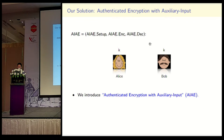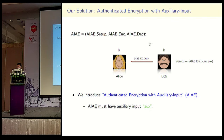Our solution is to introduce a new primitive called Authenticated Encryption with Auxiliary Inputs, which generalizes traditional authenticated encryption in two aspects. First, AI-AE must support auxiliary inputs: to encrypt a message M, Bob needs to pick auxiliary input AUX and send both the ciphertext and the auxiliary inputs to Alice. With the auxiliary inputs, Alice can decrypt the ciphertext using her secret key.